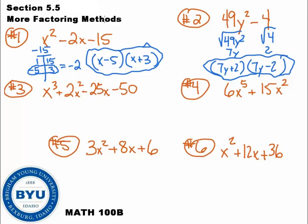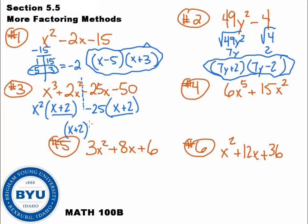Question number three: I don't see any common stuff. I have one, two, three, four terms — a four-term polynomial means we factor by grouping. I chop it in half. On the left side, x squared comes out, leaving me with x plus 2. On the right, I have negative 25 and negative 50 — I pull out a negative 25, leaving me with x plus 2. These are common parentheses, so I pull them out: x plus 2, and I'm left with x squared minus 25. That's not done — it's a perfect square. Square root of x squared is x, square root of 25 is 5. My final answer is x plus 2, x plus 5, x minus 5.